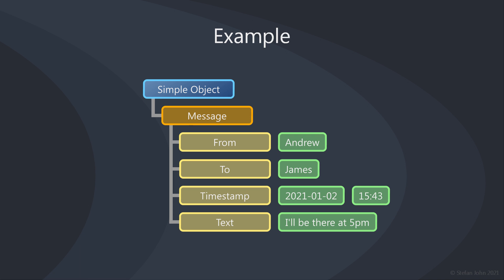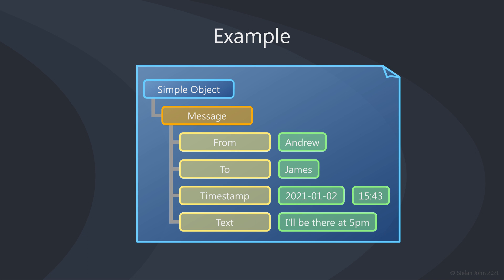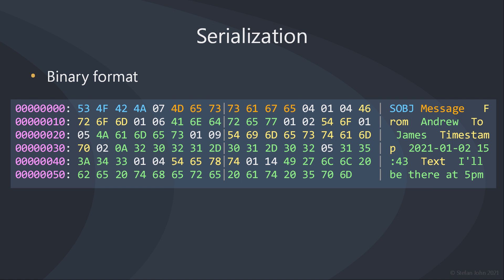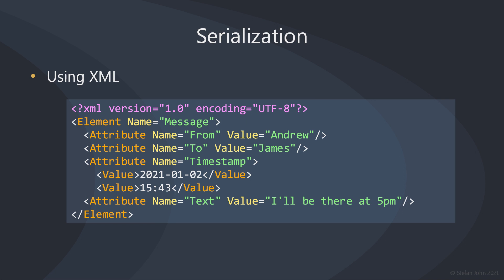But how do we actually translate this object into a format that can be stored, for example, as a file? In other words, how can we serialize a simple object? Of course you could use a special binary format and write a binary file, but that would create files that are hard to read for humans and would require programs to comfortably change the content of these files. So instead of writing binary data, you could use one of the existing textual formats or markup languages, like XML.